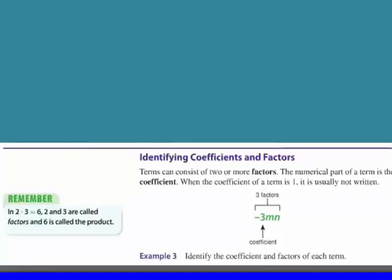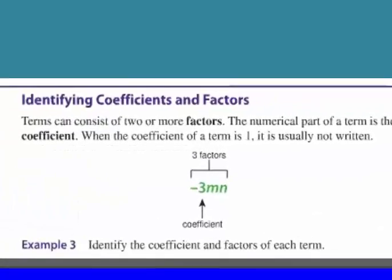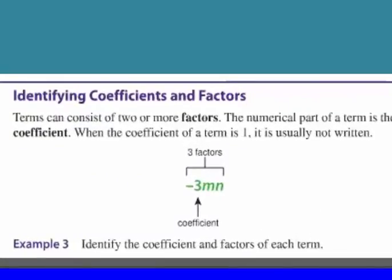Well, factors are numbers or variables that are multiplied together. So here we have three different factors. We have negative 3, m, and n. They're all multiplied together. So they're all factors.